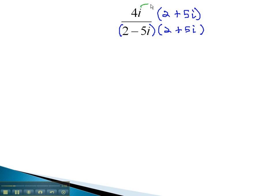In the numerator, we simply have to distribute. 4i times 2 is 8i, and 4i times 5i is positive 20i squared. However, recall that i squared is negative 1, which changes the positive 20 into a negative 20.